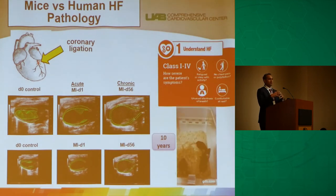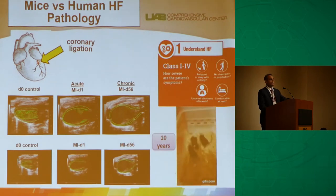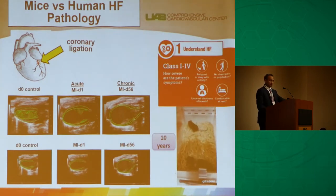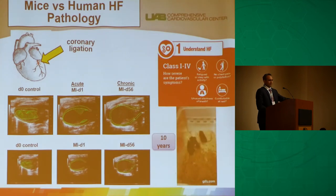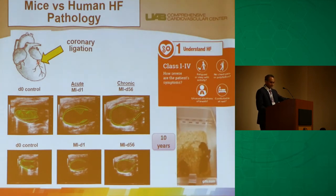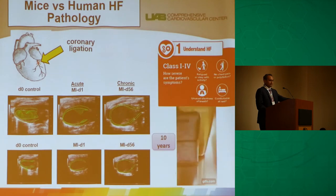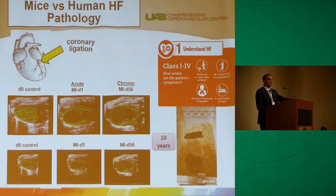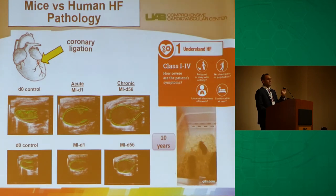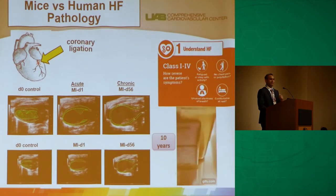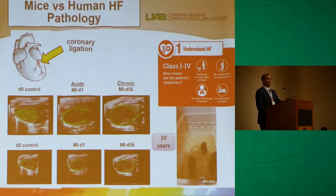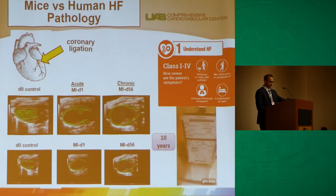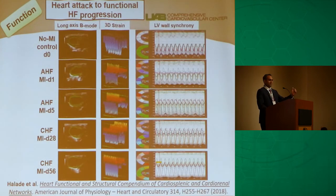After coronary ligation in mice, dysfunction is visible within 24 hours — wall thinning at MI day one, acute heart failure, and by day 56 the ultrasound shows the left ventricle barely moving. Yet these day-56 mice are moving around, physiologically active. Compare that with chronic heart failure patients who are comfortable only in bed at stage four — structurally and functionally these mice truly model heart failure.